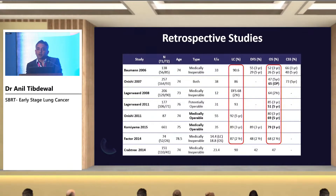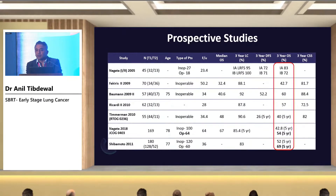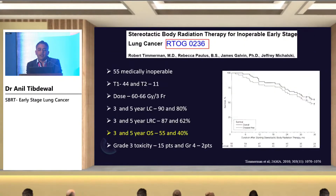There are various retrospective studies in the 21st century showing good local control, with 3-year and 5-year overall survival ranging between 40% and 60% depending on whether the patient is medically inoperable or operable. Prospective studies have also shown 5-year overall survival can reach 50% to 60%. The first prospective observational study, RTOG 0236, showed 5-year local control as high as 80% and 5-year overall survival as high as 40% in medically inoperable patients.